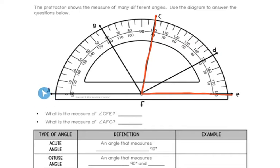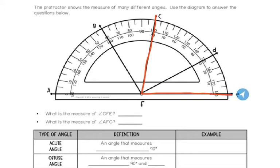Over here is the left side of the protractor, and this is the right side. If you're looking from the right, you're going to use the numbers on the bottom of the line. For this angle, we have it lined up on the right, so we are going to use the numbers on the bottom of the line. I'm going to look where this top ray crosses, and it crosses right here at 80. So angle CFE is 80 degrees.